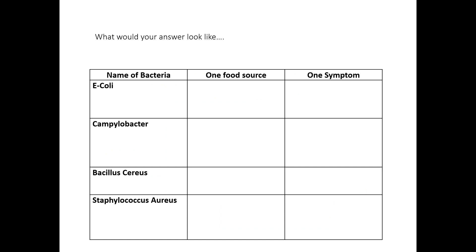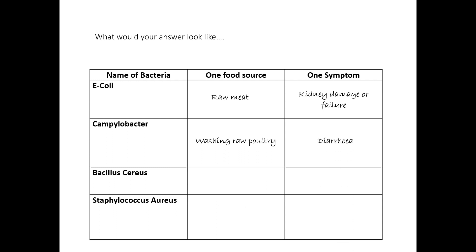Your final answer could look like this. E. coli: raw meat, kidney damage or failure. Campylobacter: washing raw poultry, diarrhea. Bacillus cereus: cooked rice, vomiting.